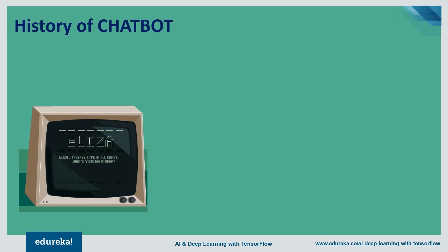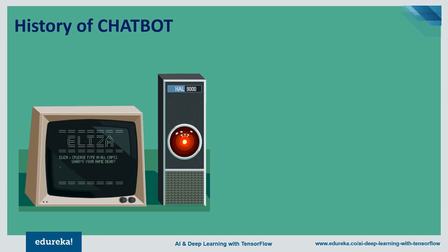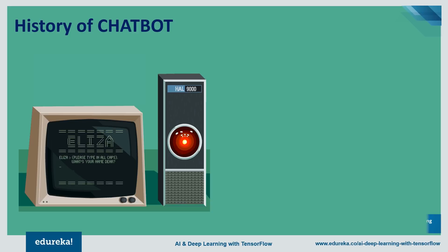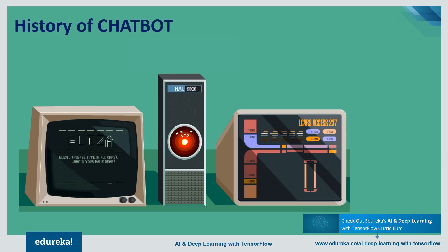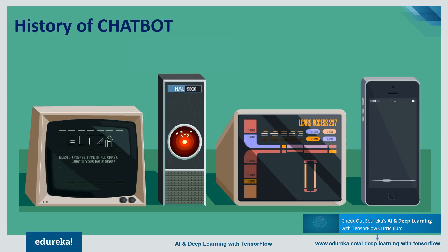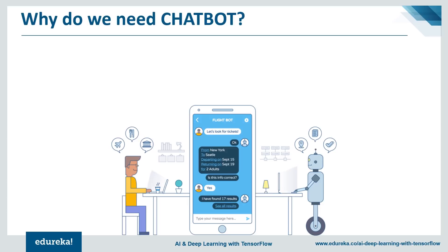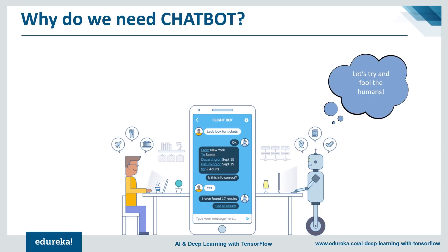The first chatbot was named Eliza, that blurted out canned lines for certain keywords using program scripts. Many users developed an affinity towards her even after knowing that the program simply followed a script. Since then, chatbots have advanced beyond scripts and rules. The new generation chatbots can encourage human-like conversations with the help of artificial intelligence.